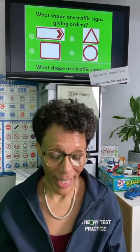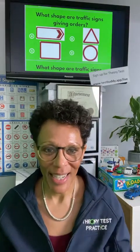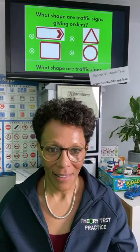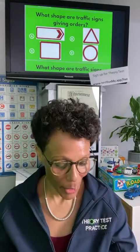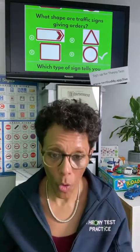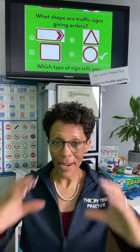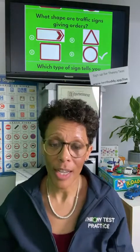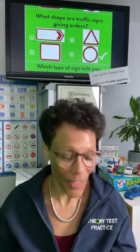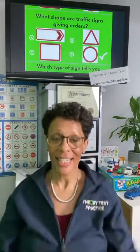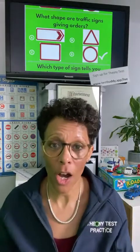You can also go to that link to subscribe to my YouTube channel. So circular signs give orders. If you make a circle with your hands, look at your hands and you can see the O for order. Circle signs are orders. If you got it wrong, make that circle with your hands, see the O, and tell yourself: circle signs are orders.